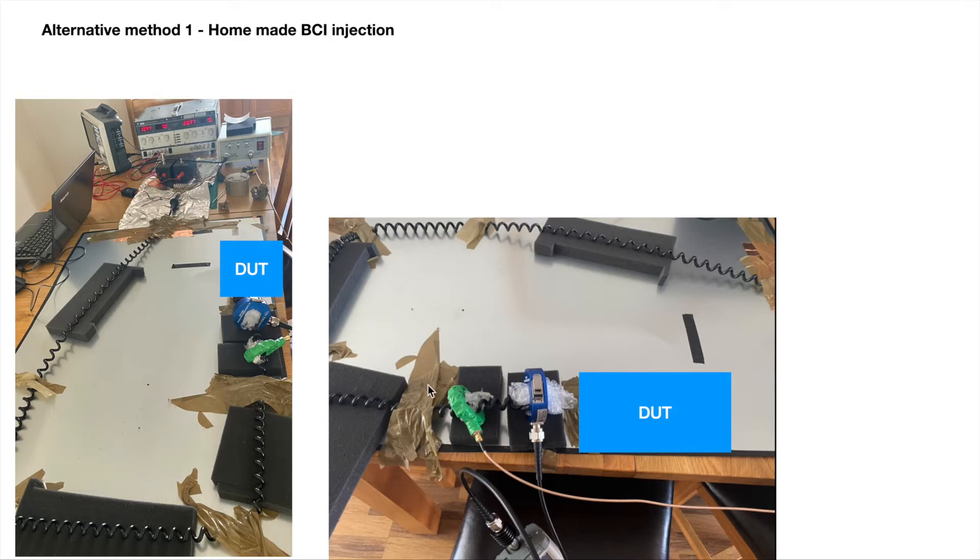And here is a zoomed in version of the test setup. What we found is the power level that we injected into this homemade current probe is far lower than the actual required power to generate the same level of RF current in the cable. And also, if we apply a very big power, I got a suspicion that the core might be saturated before we reach to that level.